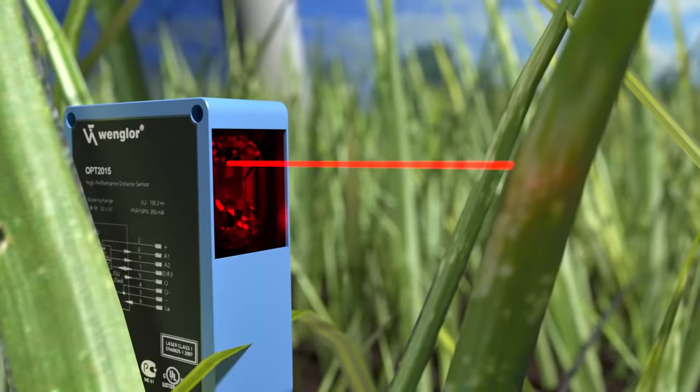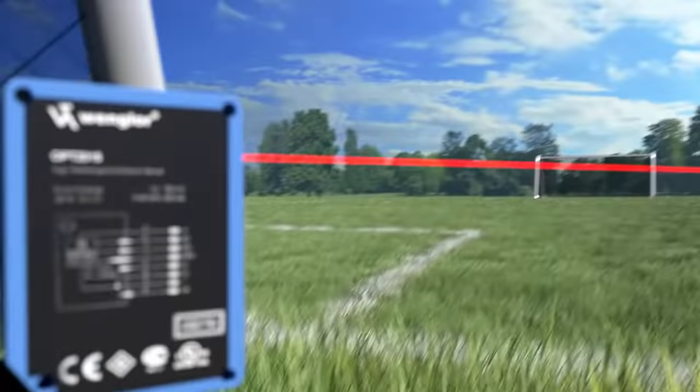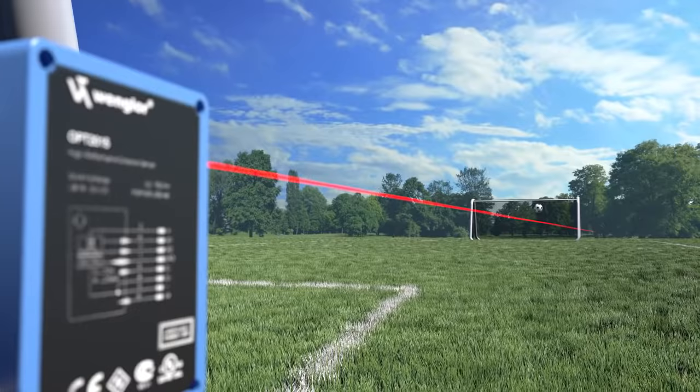Laser distance sensors provide extreme distance measurement from fractions of a millimeter to beyond the length of a soccer field, with pinpoint accuracy and high-speed measurement up to a thousand times faster than ultrasonic sensors.